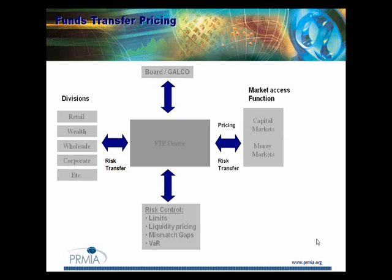All of those business lines will lay off their funds to treasury, which is the clearer for the bank. The money that they are borrowing comes from treasury. The funding for the bank will be organic to the bank - it could be retail deposits, customer deposits - and then any shortfall for a bank running a greater than 100% loan-to-deposit ratio is of course funded through the wholesale markets, capital markets, interbank markets, short and long term. So in this diagram we see that the treasury center, the FTP center, is essentially the clearer for the bank.